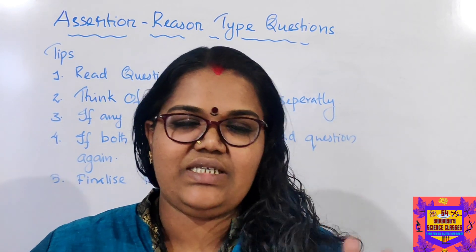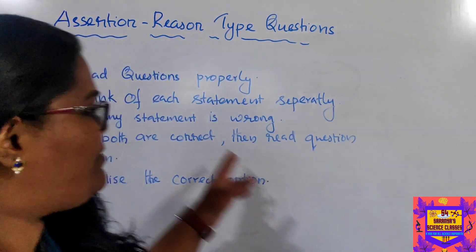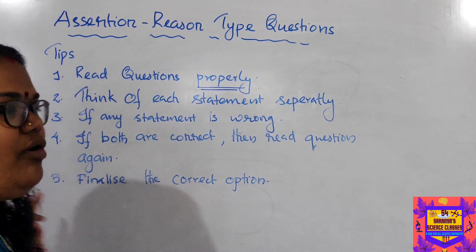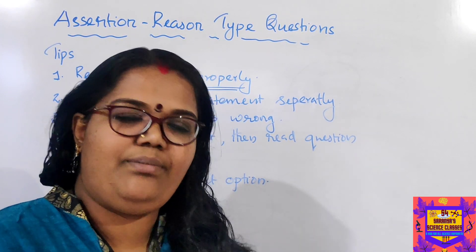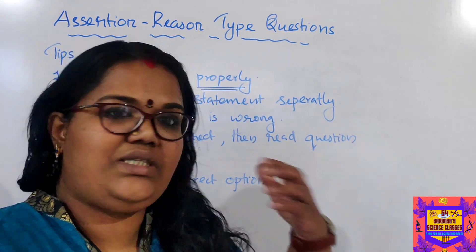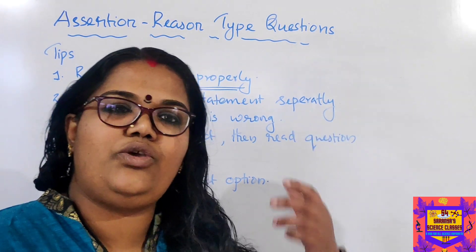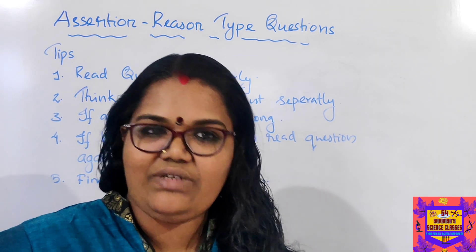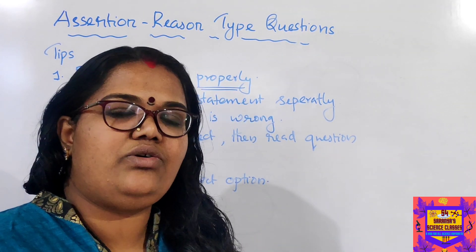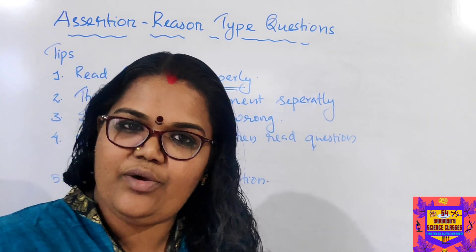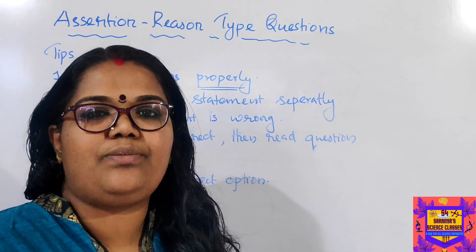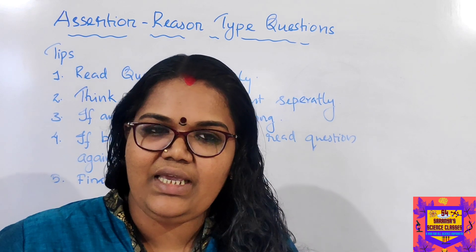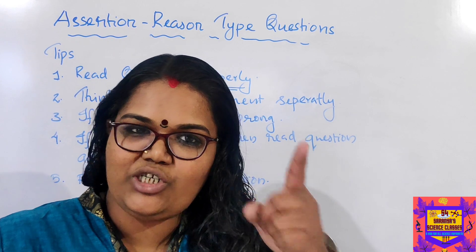The first and foremost tip: read the question properly and thoroughly. In CBSE science, out of 20 questions, 14 questions cover MCQ, case-based studies, and assertion-reason — you can easily score marks there. But students are losing marks because they are not reading the question carefully. Whatever the language, you have to read the question properly. If you read the question two to three times, automatically you will understand what it means. Once you understand the meaning, answering becomes very easy.